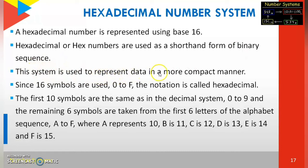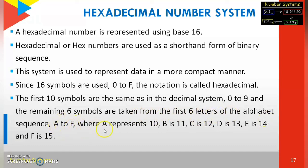Hexadecimal number system is used to represent numbers in a more compact manner — it requires only 4 digits to represent what binary needs 8 digits for. Since 16 symbols are used (0 to F), the notation is called hexadecimal. The first 10 symbols, 0 to 9, are the same as in the decimal system. The remaining 6 symbols are taken from the first 6 letters of the alphabet: A to F, where A=10, B=11, C=12, D=13, E=14, and F=15.